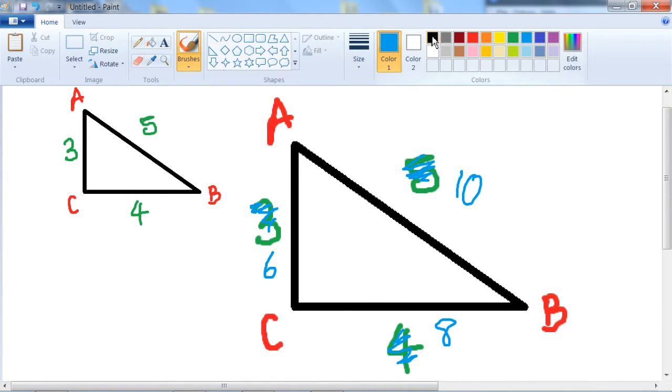So what about the quantity AB over BC? Did that change or not when we increased the size of the triangle? So if we divide 2 lengths together, I just chose AB and BC but we could choose any lengths.